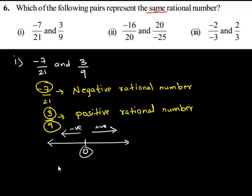Therefore, we can say that negative 7 upon 21 and 3 upon 9 are not same. Thank you.